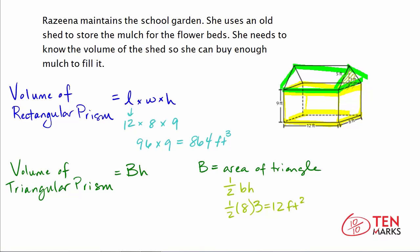Now we apply this to the volume formula for a triangular prism: the area of the base, which we found as 12 feet squared, times the height. The height here is the length that runs along the prism, which is 12 feet. So we multiply 12 feet squared by 12 feet. 12 times 12 is 144 feet cubed.